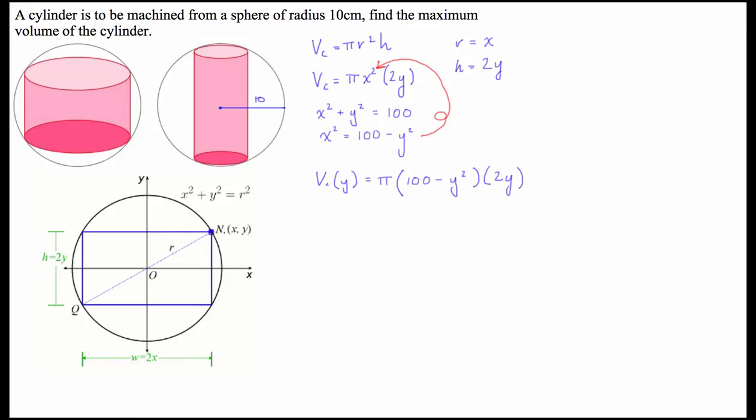So, what I'm going to do next is I'm going to simplify this a little bit to make it easier to differentiate. So, I'm going to multiply the y into the bracket. And I'm also going to take the 2 from this one out the front with the pi.